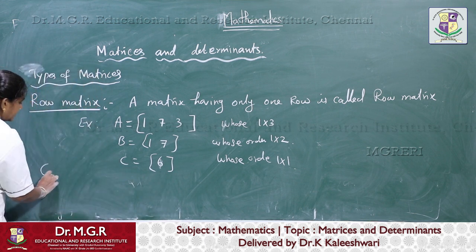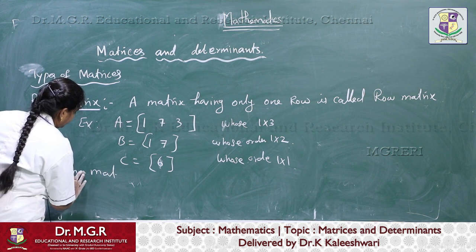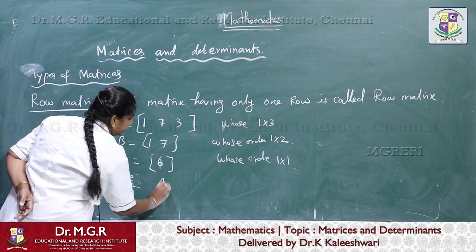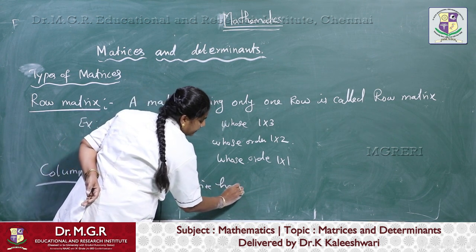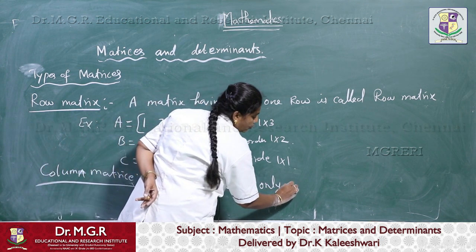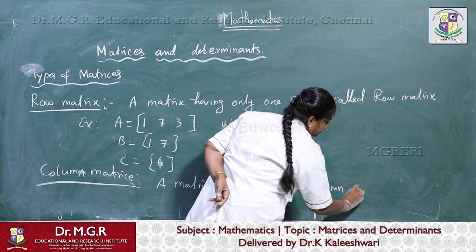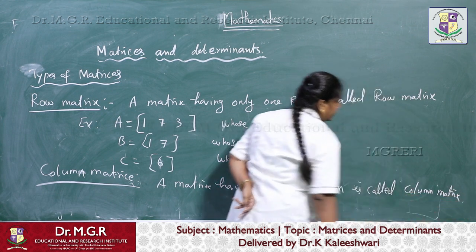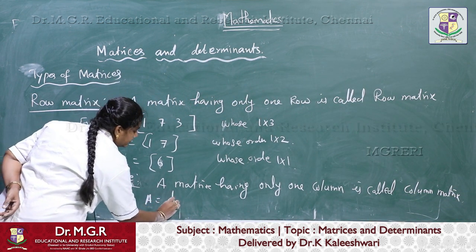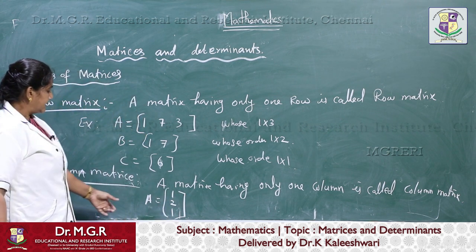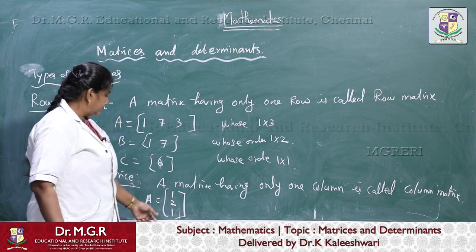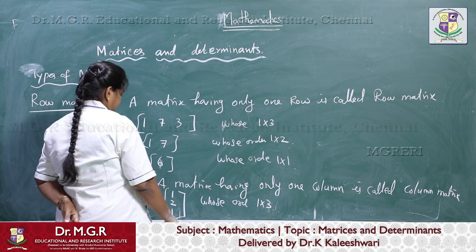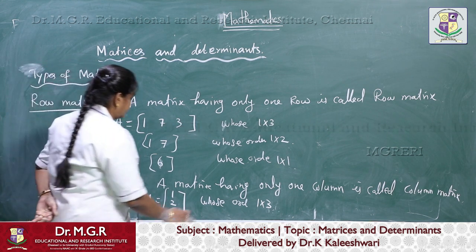Next, that is a column matrix. A matrix having only one column is called a column matrix. For example, A equal to [1, 2, 1]. This matrix has only one column. Whose order is — sorry — 3 by 1.